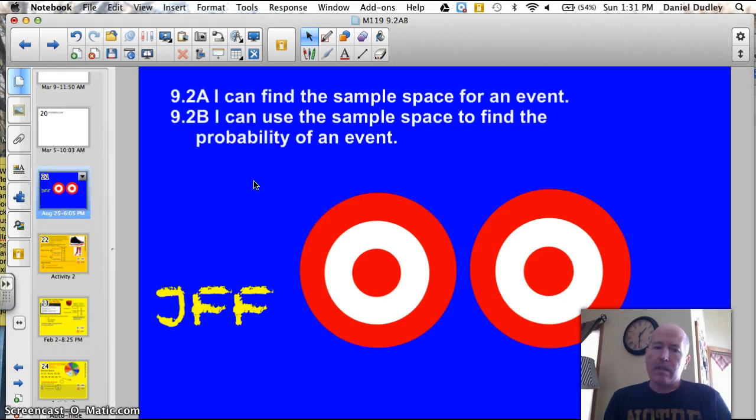9.8, 9.2a: I can find the sample space for an event and 9.2b: I can use that sample space to find the probability of an event. Let's do this thing.